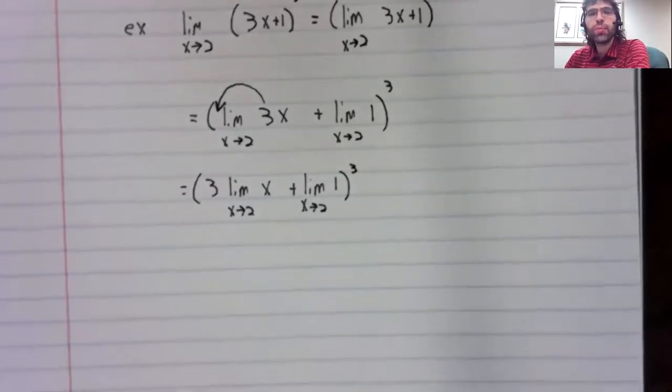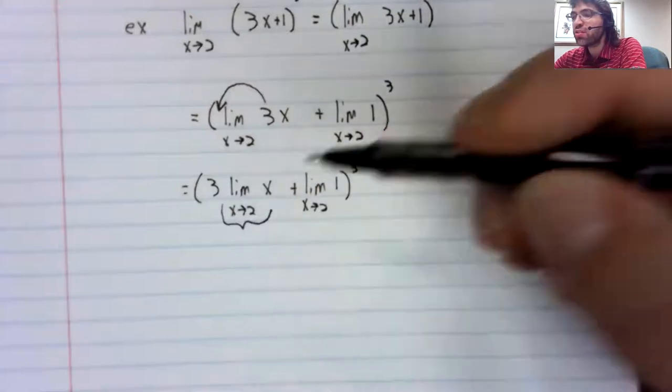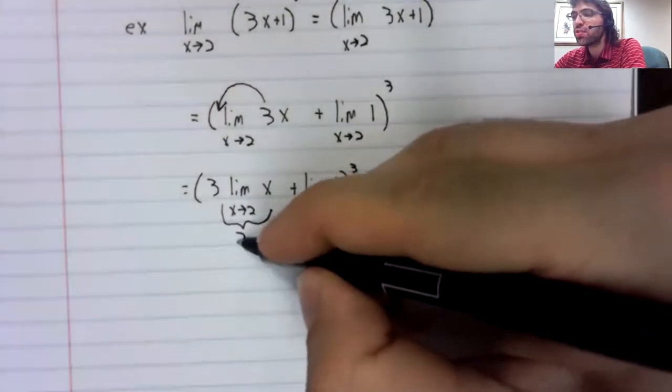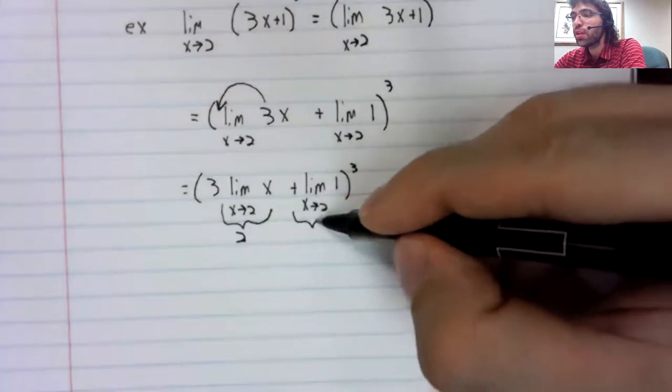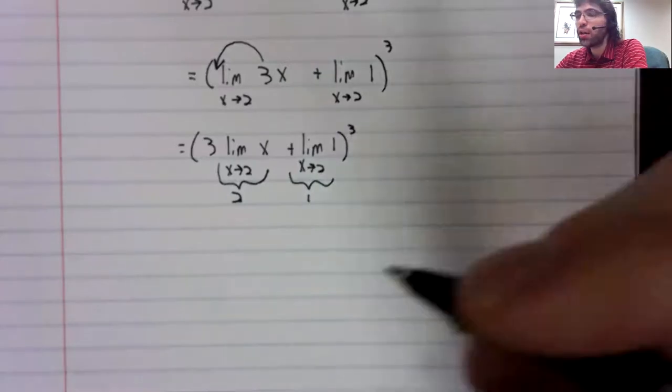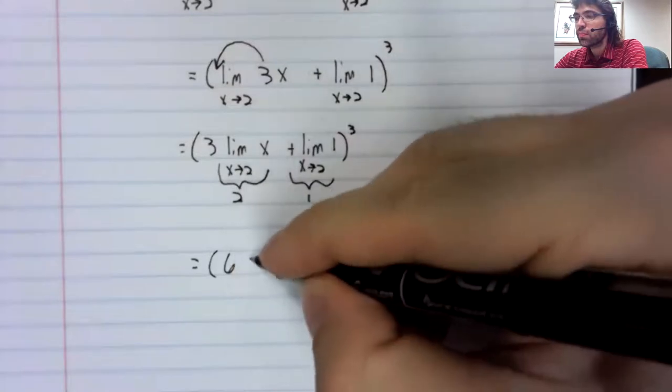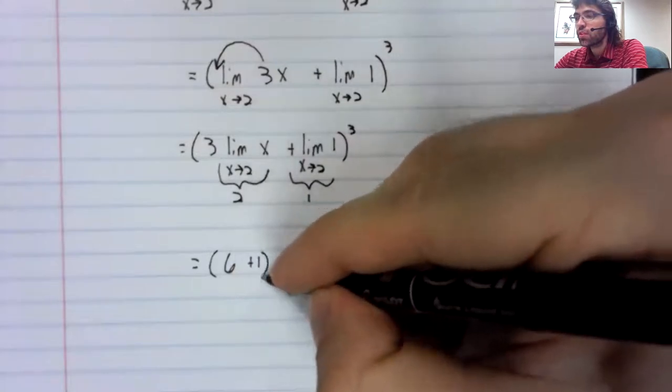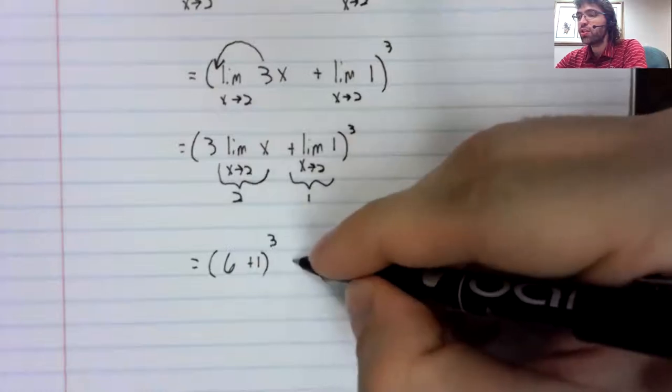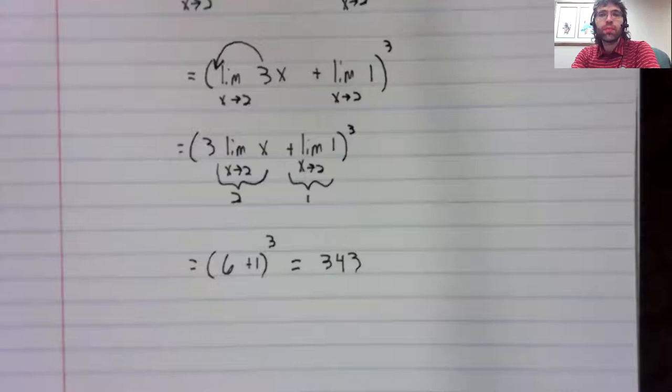And now these limits we can take. The limit as x approaches 2 of x is 2. The limit as x approaches 2 of 1 is 1. So this is 7 to the third, which turns out to be 343.